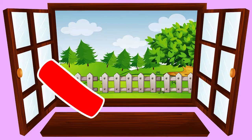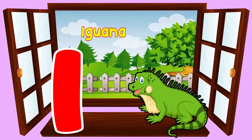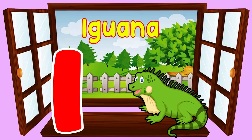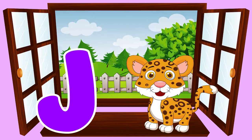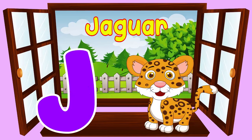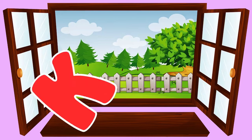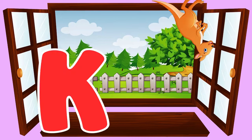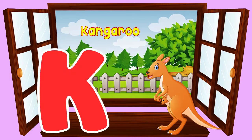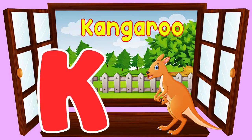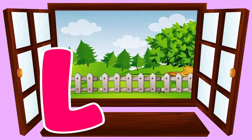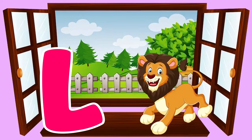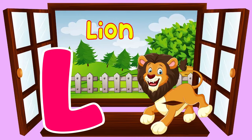I is for iguana. i, iguana. J is for jaguar. j, jaguar. K is for kangaroo. k, kangaroo. L is for lion. l, lion.